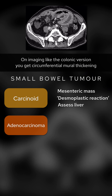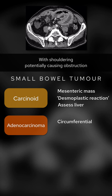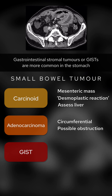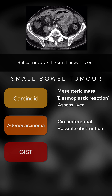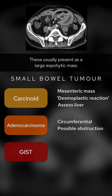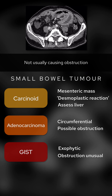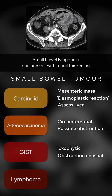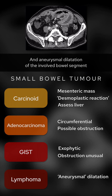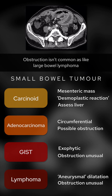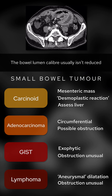On imaging, like the colonic version, you get circumferential mural thickening with shouldering, potentially causing obstruction. Gastrointestinal stromal tumours, or GISTs, are more common in the stomach but can involve the small bowel as well. These usually present as a large exophytic mass, not usually causing obstruction. Small bowel lymphoma can present with mural thickening and aneurysmal dilatation of the involved bowel segment. Obstruction isn't common, as like large bowel lymphoma, the bowel lumen calibre usually isn't reduced.